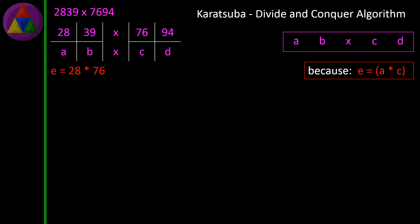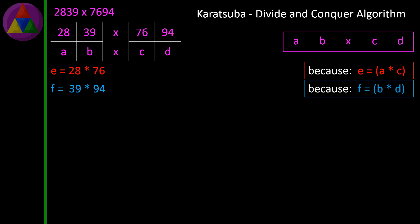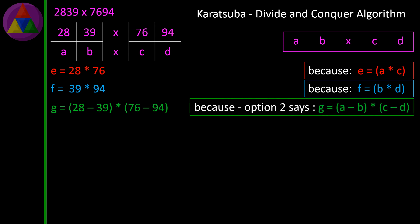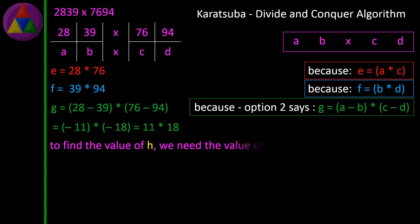F = 39 × 94, because F = B × D. G = (28 − 39) × (76 − 94), because option two says G = (A−B) × (C−D). 28 − 39 = −11, and 76 − 94 = −18, which can be written as 11 × 18. To find the value of H, we need the value of G, because H = E + F − G.